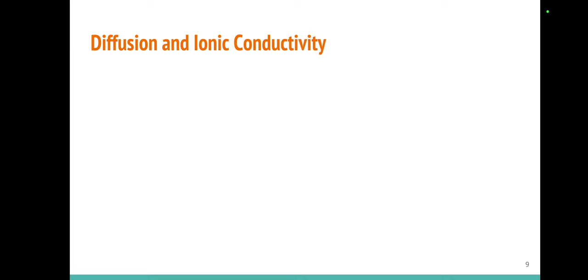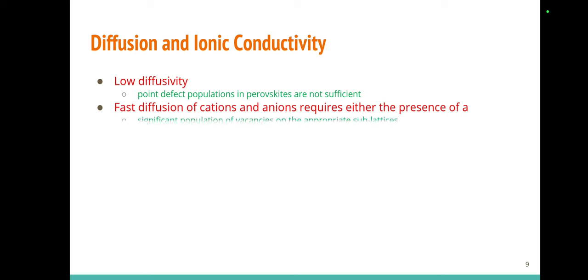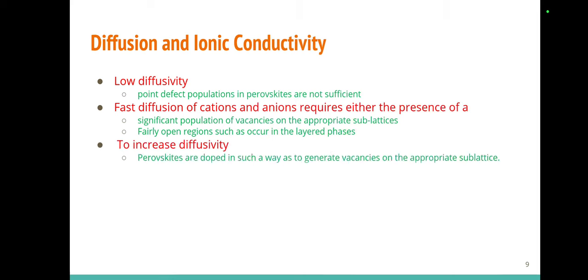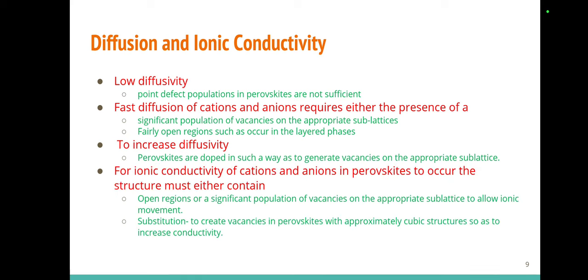Diffusivity is the phenomenon in which charge carriers travel from one side to another through space. In perovskite materials, diffusivity is low because vacancies are not present in sufficient population. However, we can create cation or anion vacancies to increase diffusivity and thereby ionic conductivity. To increase diffusivity we have to introduce vacancy concentrations, which can be done by substitutional methods or other techniques.